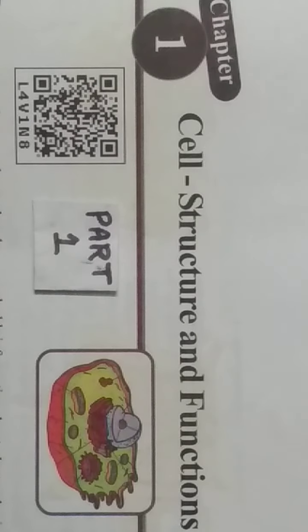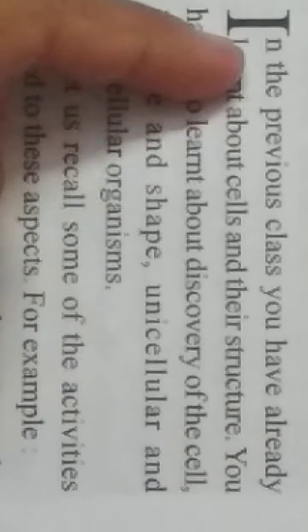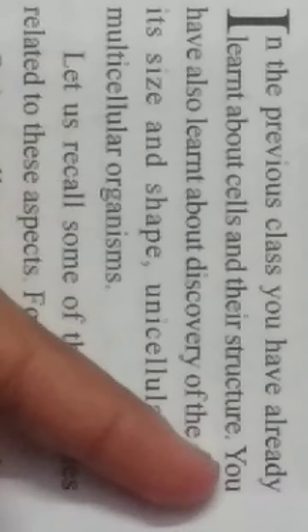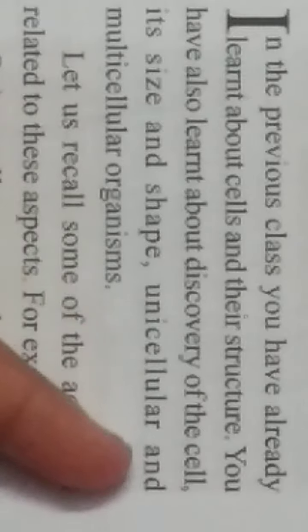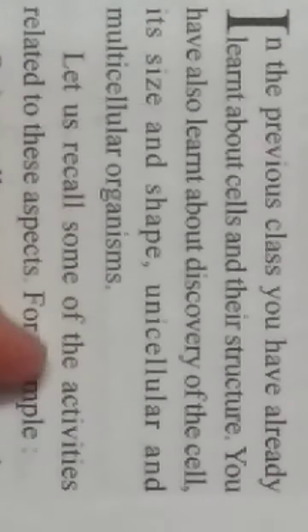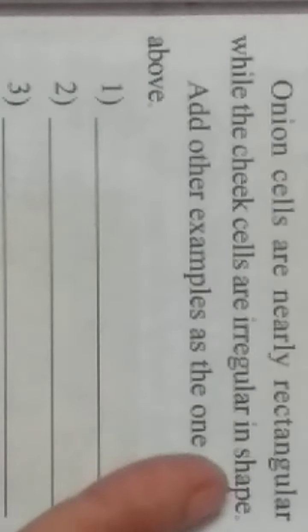In the previous class you have already learned about cells and their structure. You also have learned about the discovery of the cell, its size and shape, and unicellular and multicellular organisms. Let us recall some of the activities related to these aspects. For example, onion cells are nearly rectangular while cheek cells are irregular in shape. Add other examples as given above.